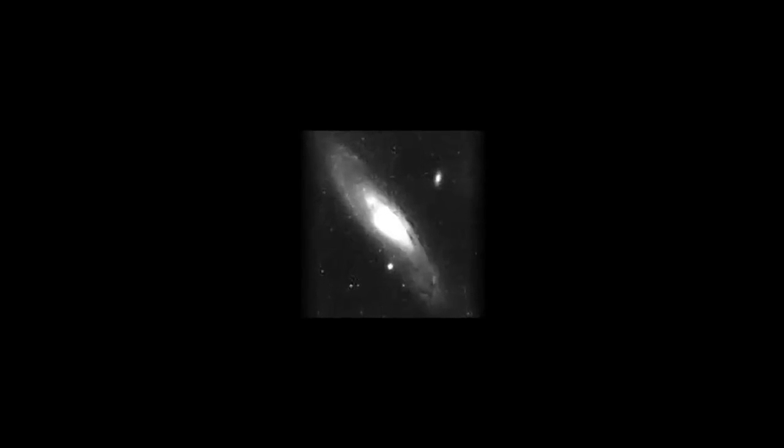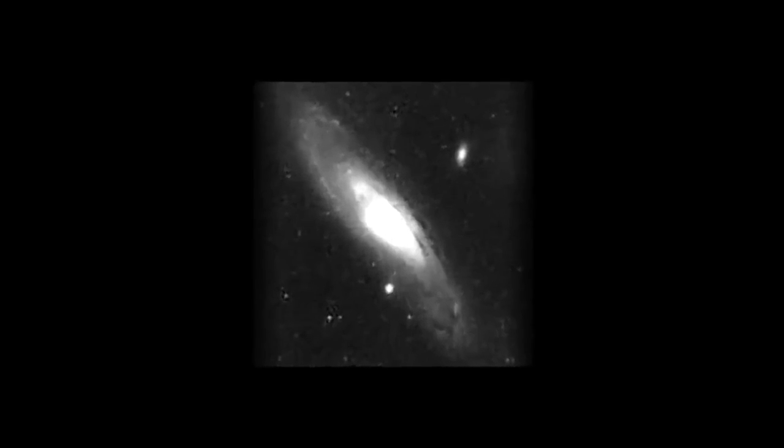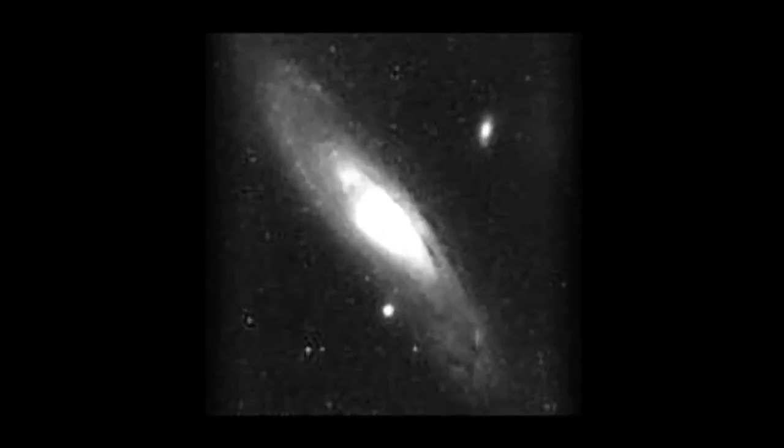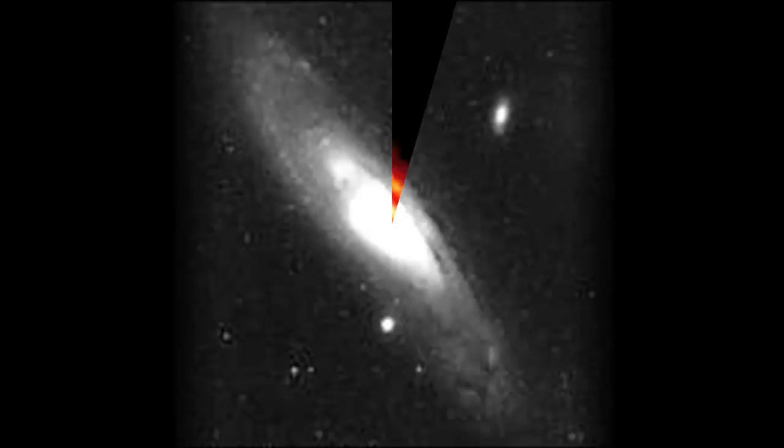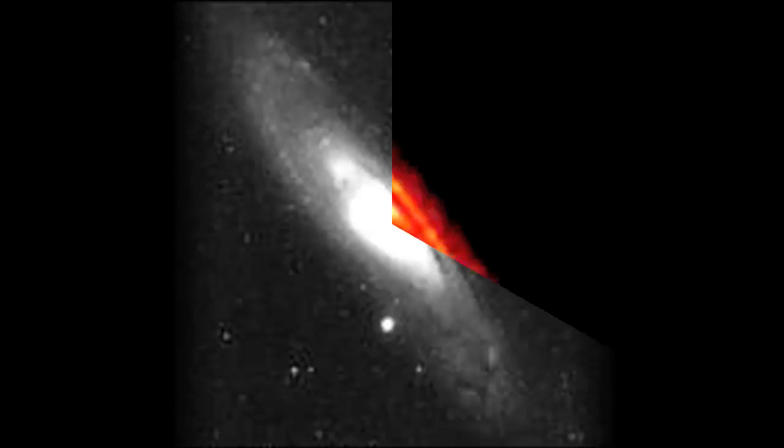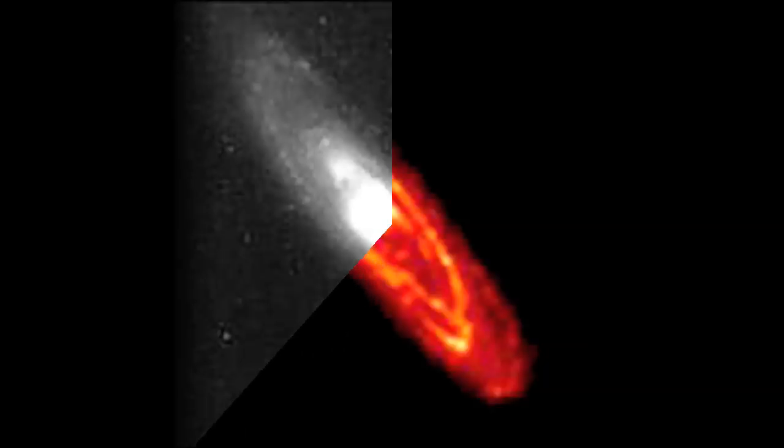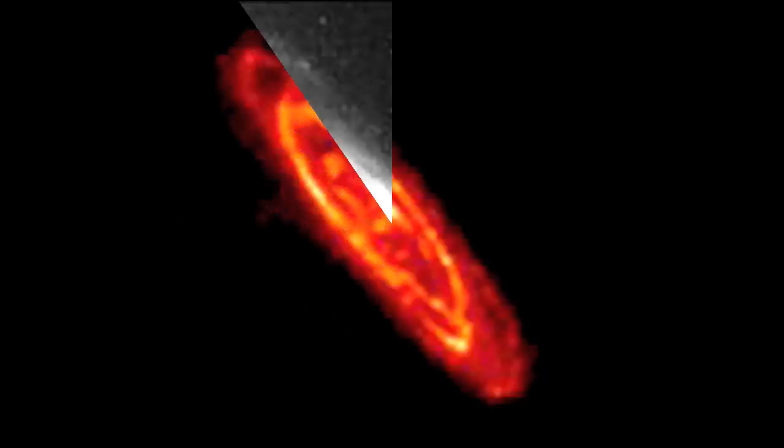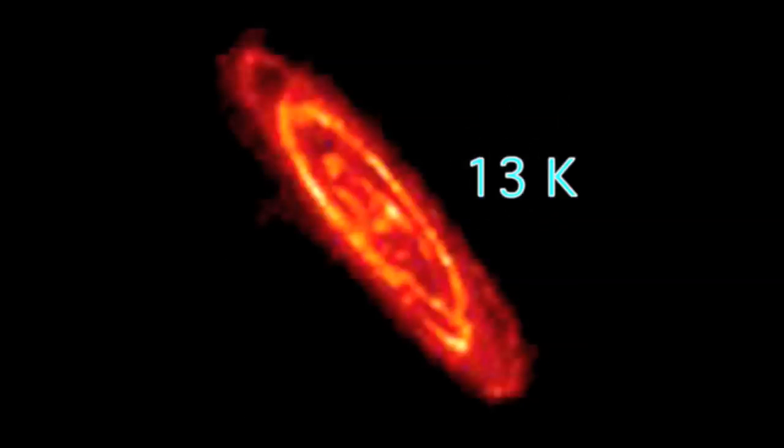Andromeda is one of the closest galaxies to our own and considered to be a typical spiral galaxy. However, ISO discovered that it was made of several concentric rings of very cold dust at around 13 Kelvin, too cold to be seen at visible wavelengths.